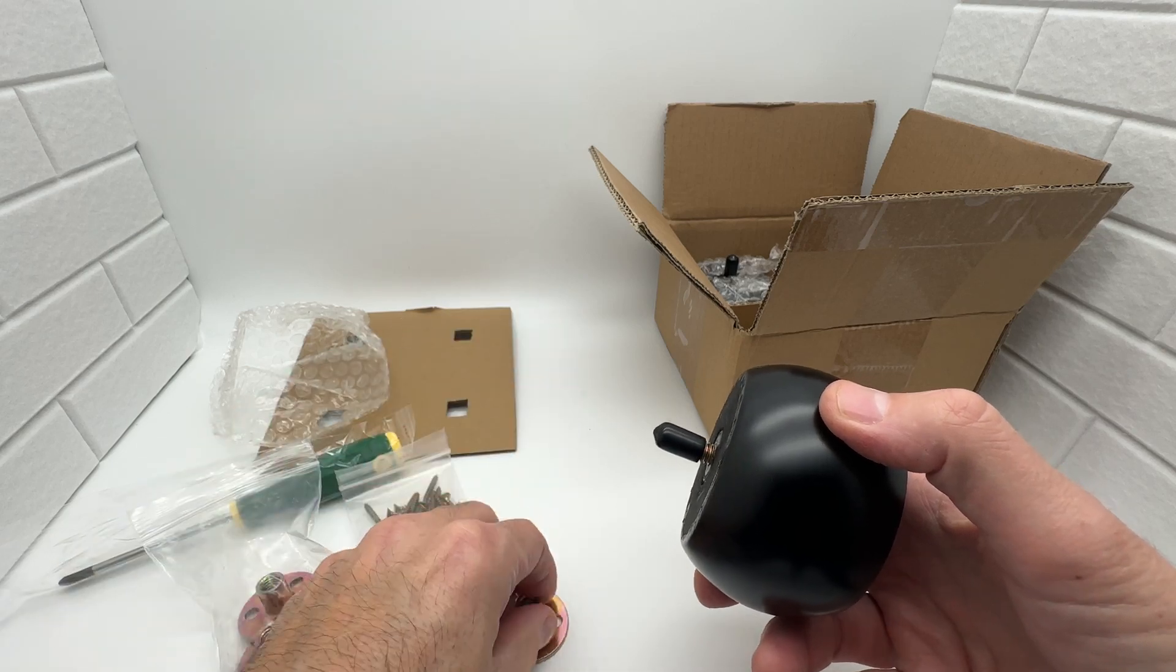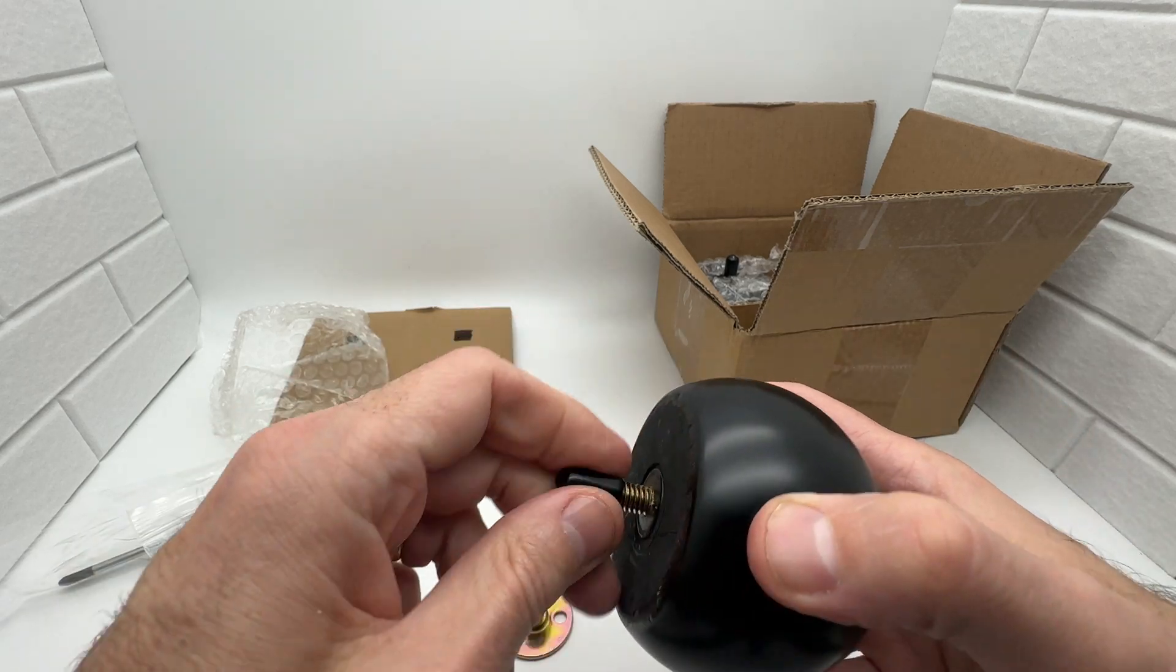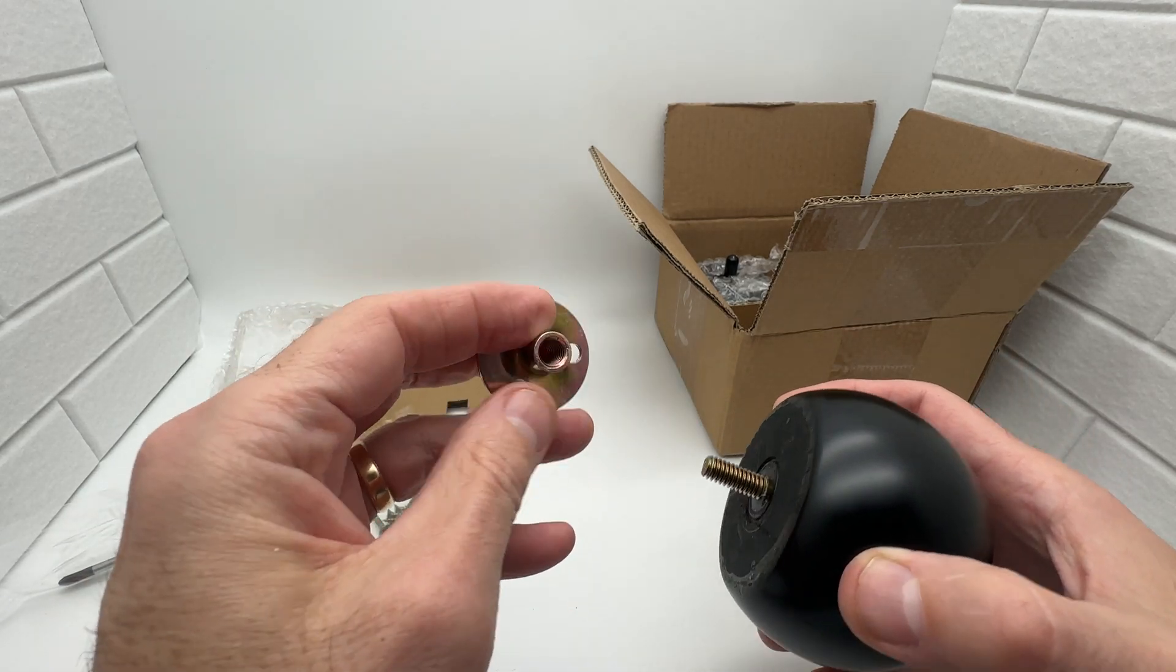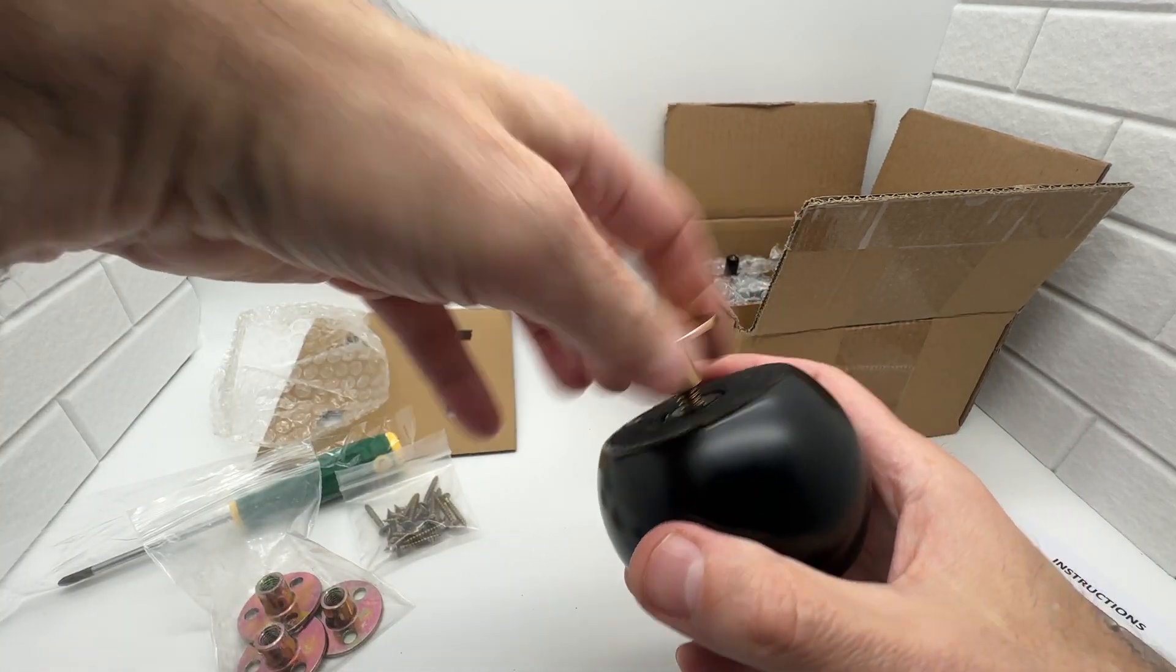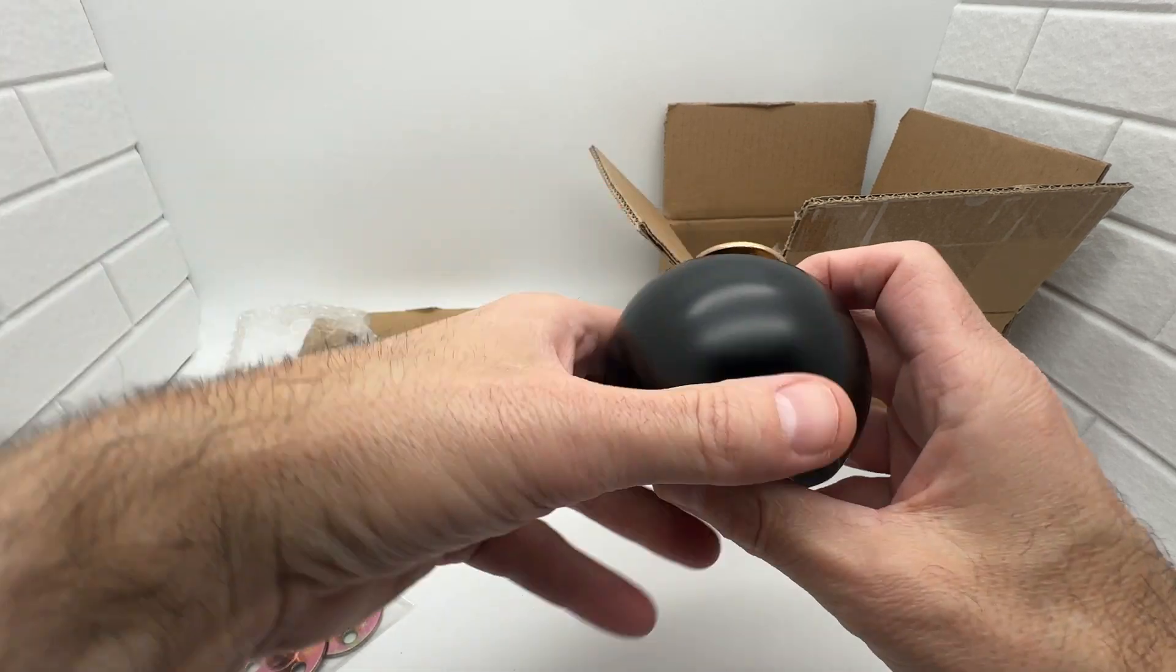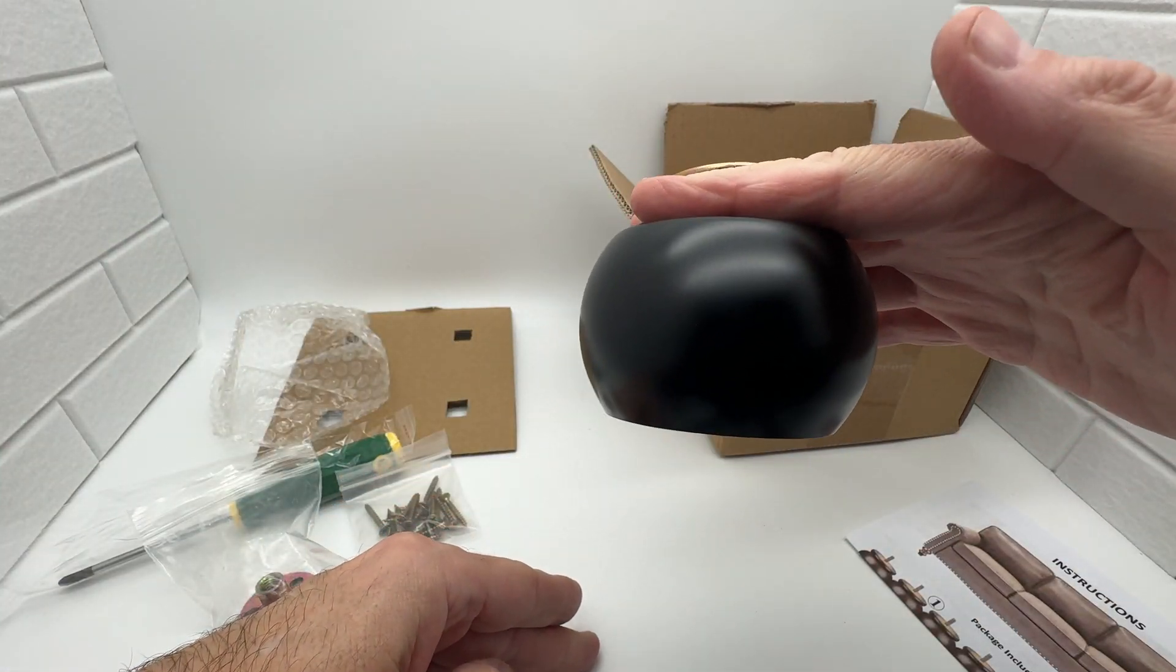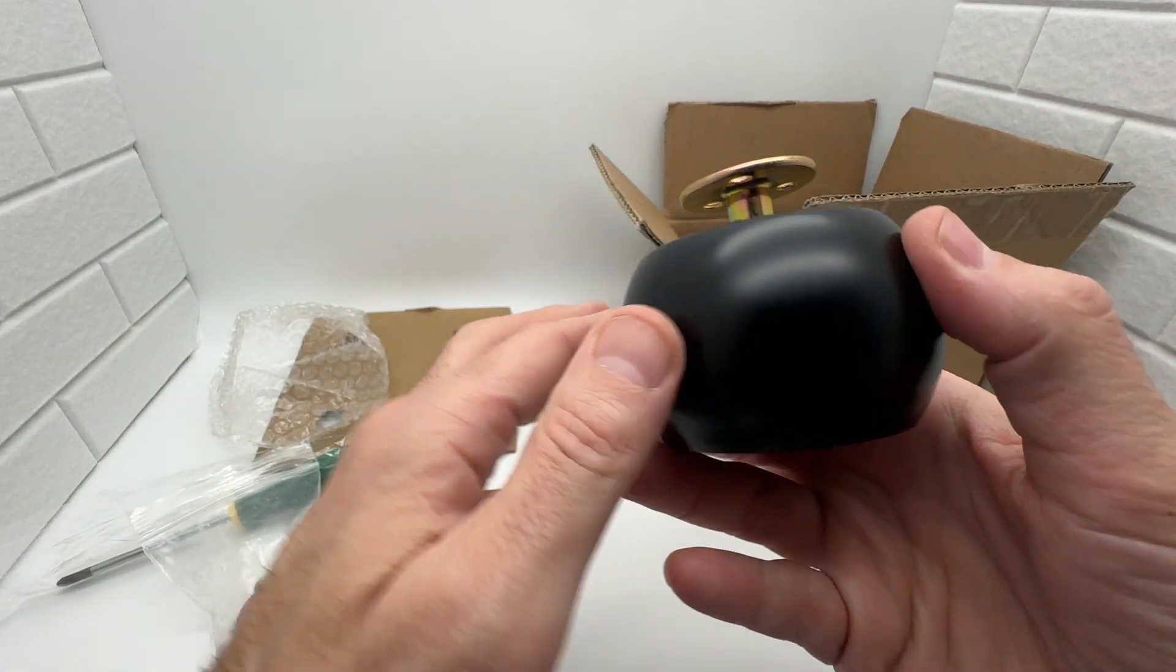You install these on the wood base, and then basically once you install this into the wood base, you just screw these into here, just like this. That's how they'll look. Once they're installed, they'll be sitting on the piece of furniture like that, just like you see here.